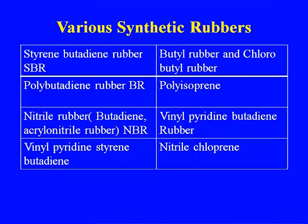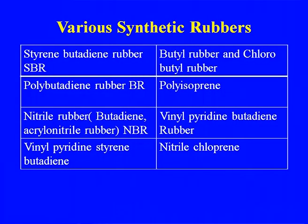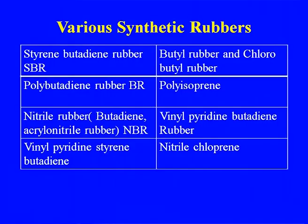The various types of synthetic rubber available include: styrene butadiene rubber (SBR), polybutadiene rubber, nitrile rubber (butadiene and acrylonitrile), vinyl pyridine styrene butadiene rubber, butyl rubber, and chlorobutyl rubber. For SBR we need ethyl benzene, which is converted to styrene. Reliance makes polybutadiene, not SBR. Nitrile rubber was developed for its excellent oil resistance, which was critical during wartime.